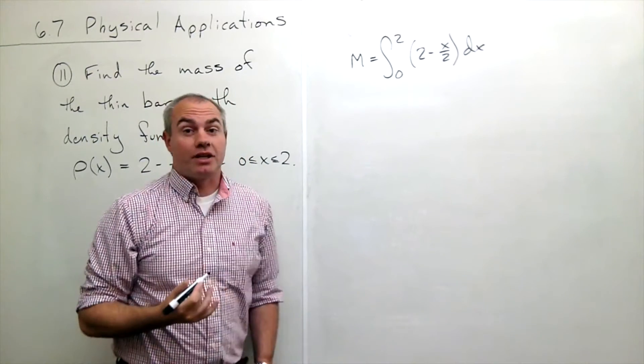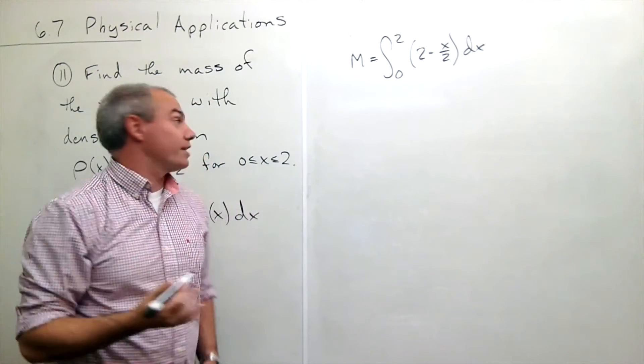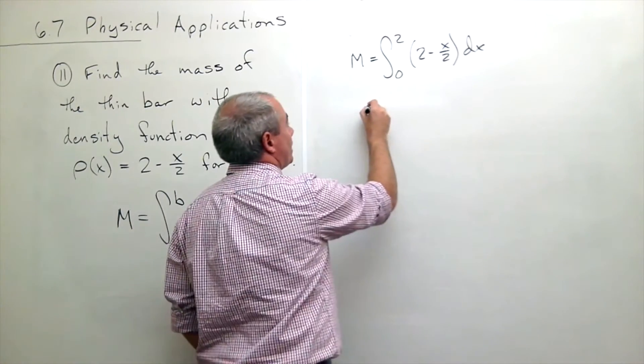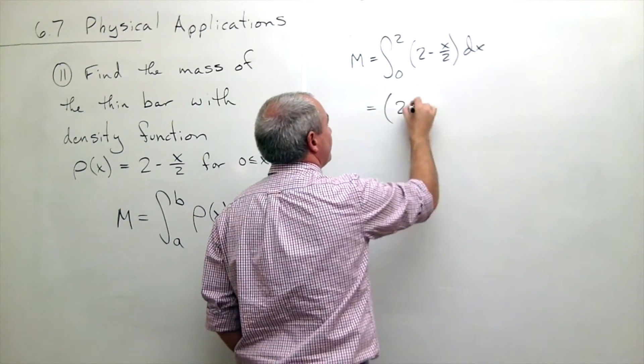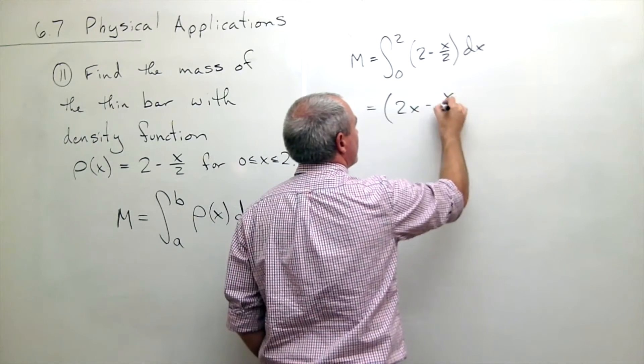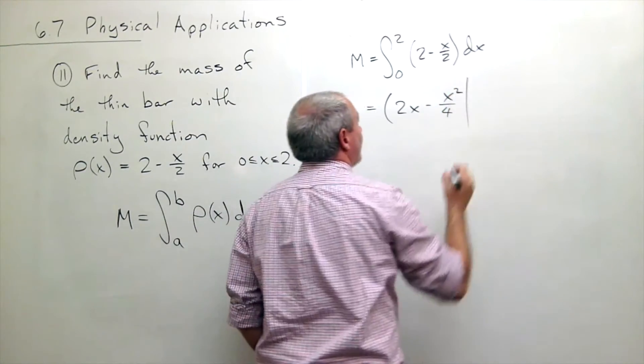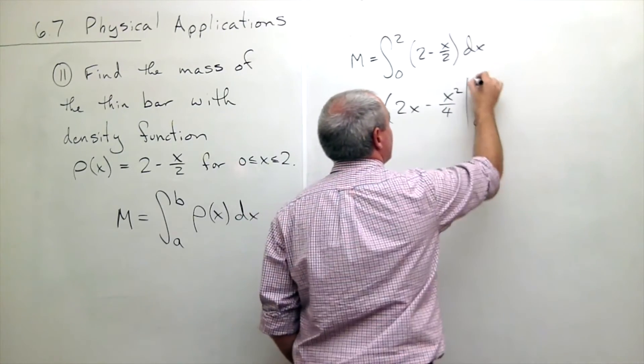And that will give us the mass of this thin bar. Let's take an antiderivative. Antiderivative is 2x minus x squared over 4, evaluated from 0 to 2.